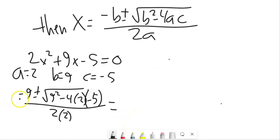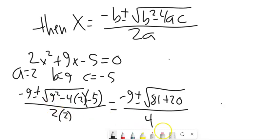So from here, now it's just arithmetic. So negative 9 plus or minus the square root of 9 squared is 81. And notice it's minus 4 times 2 times negative 5. So 4 times 2 is 8 times 5 is 40, and negative times the negative is positive. So this would be plus 40 all over 2 times A. 2 times 2 is 4.